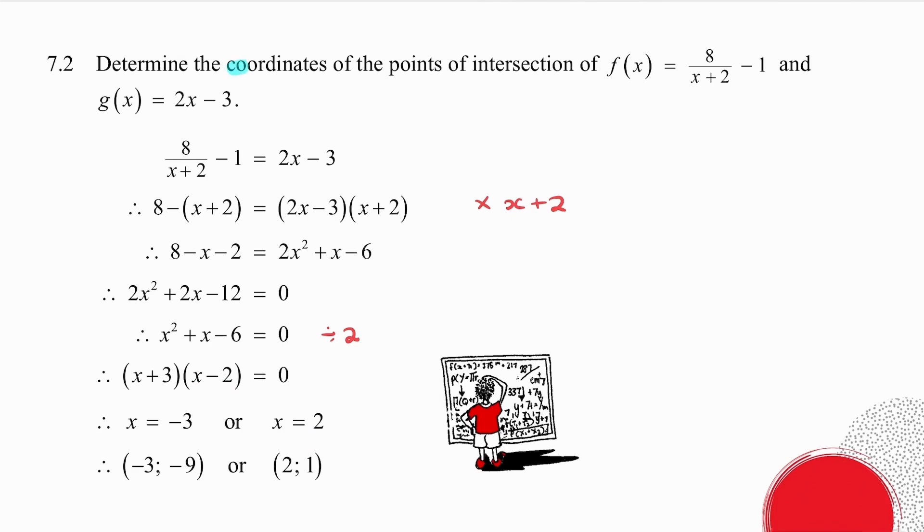The question asked you for the coordinates. So what I need to do is, now that I know what x is, I need to substitute either into f of x or into g of x. It's much easier to substitute into g of x. So in place of x goes minus 3, and I get my coordinate. In place of x goes 2, and I get my coordinate. So there's an example of quadratic equations being used in functions.